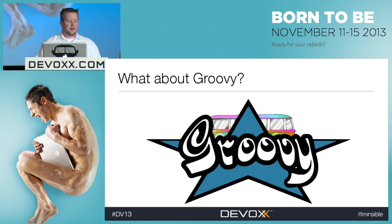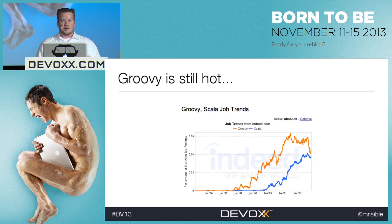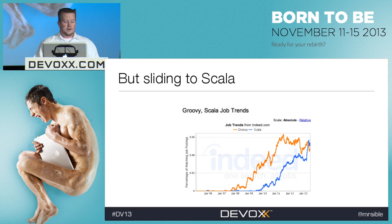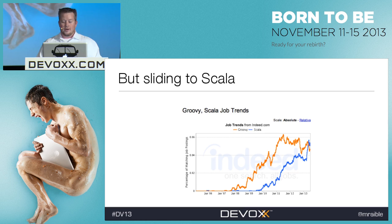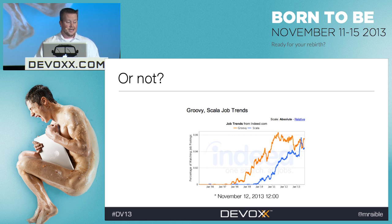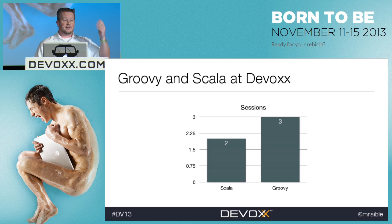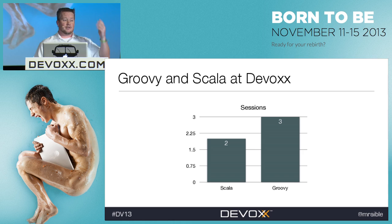What about Groovy? Groovy is still cool and Grails is awesome — it just doesn't have the hype that Scala does right now. According to job trends from January 2012 through January 2013, Groovy has gone down in popularity and Scala has gone up. But interestingly, just this morning I found that Scala took a nosedive and Groovy is way up. Even at DevOx, Scala sessions are down — two sessions versus three for Groovy.